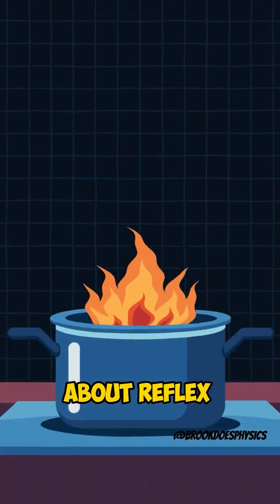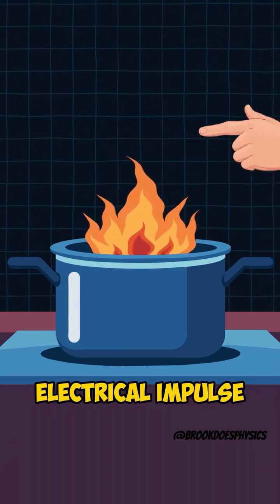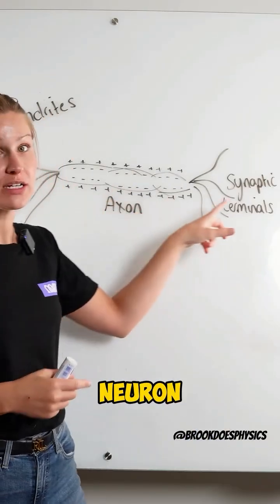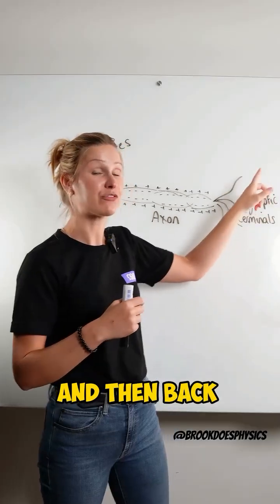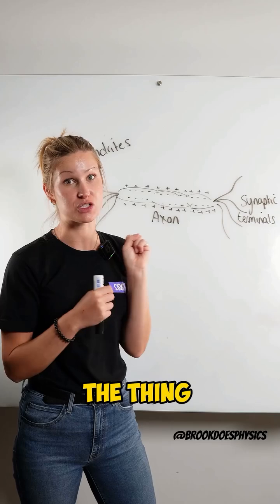You've learned about reflex actions in biology. When you touch something hot, that signal, that electrical impulse, travels along your sensory neuron to your central nervous system and then back through your motor neurons to your muscles to make you lift your hand off the hot object.